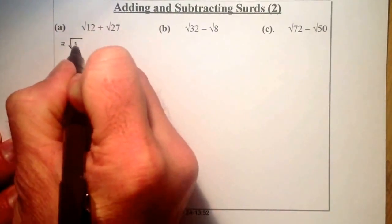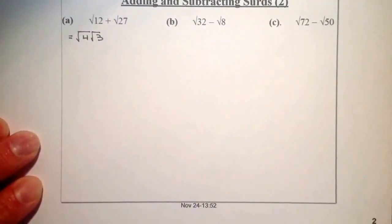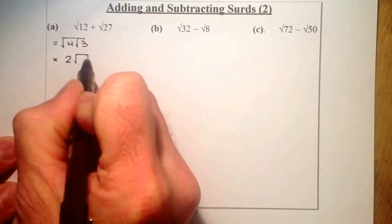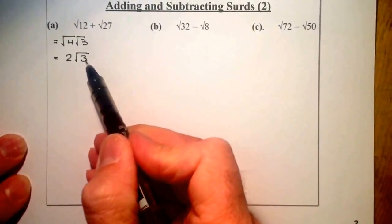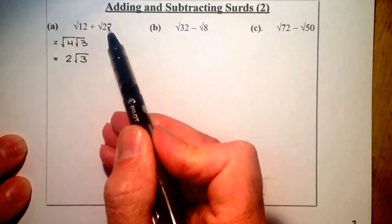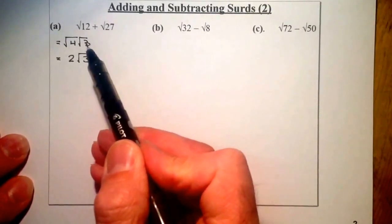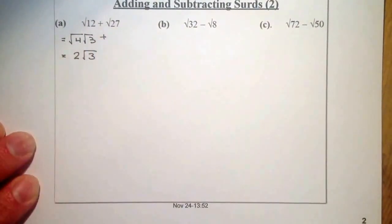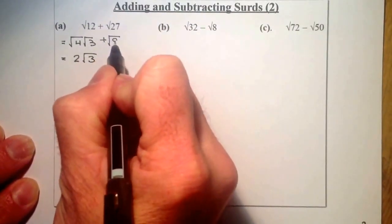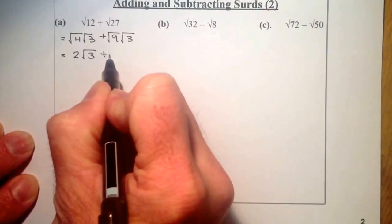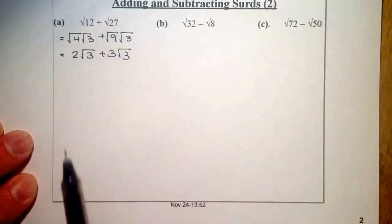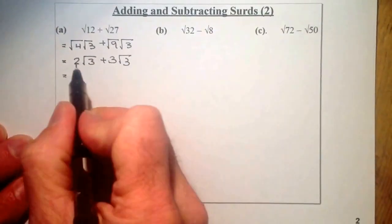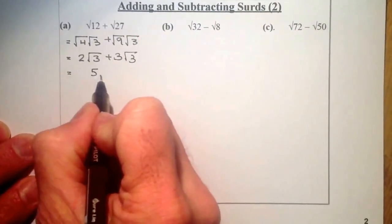I can see root four times root three multiplying together to give root twelve, and from that I get two root three. From that two root three, I'd expect that root twenty-seven can be broken down into a root three times something else — and that something else I'm hoping is a square number. So root nine times root three gives me three root three, since the square root of nine is three. Now I have a straight addition: two root three plus three root three gives me five root three.